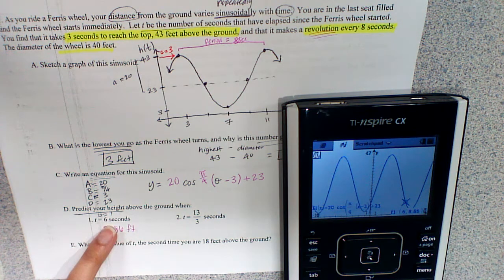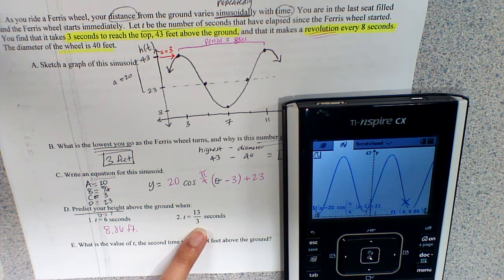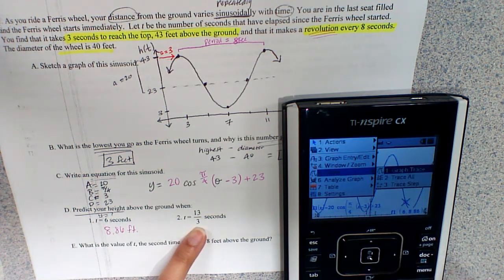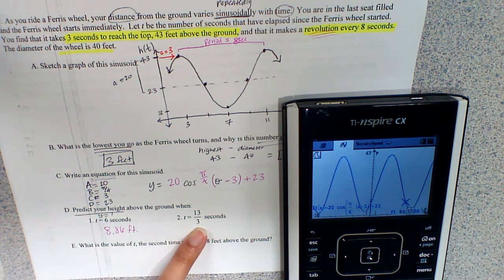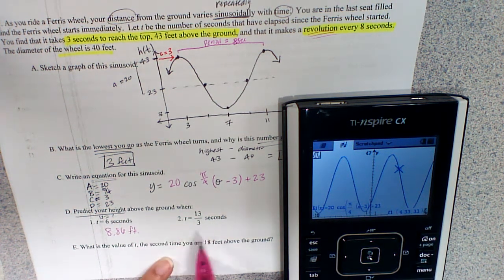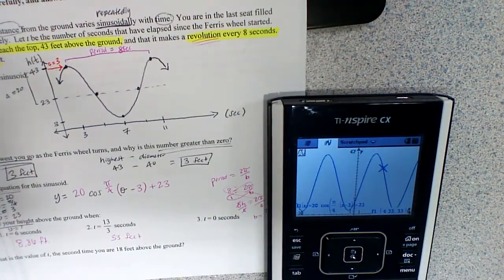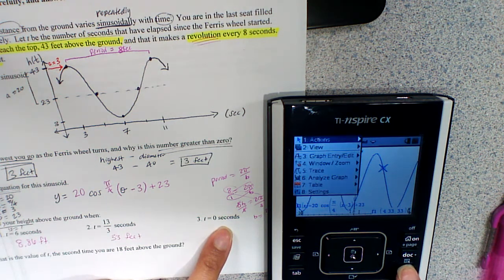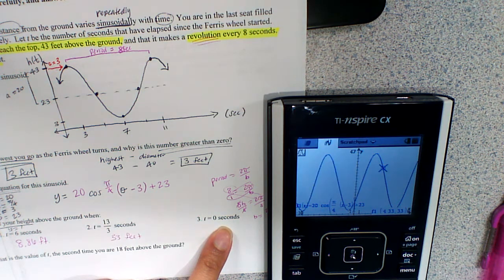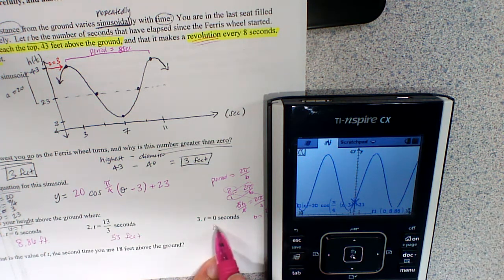For the next value, time is 13/3 seconds: go to menu, trace, graph trace, type 13 divided by 3, hit enter — it gives 33 feet. For time equals zero: menu, trace, graph trace, type 0, enter — it gives 8.8 feet.